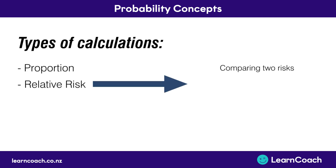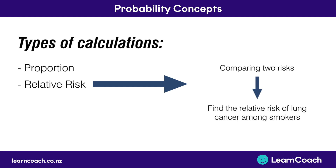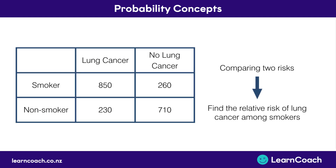Relative risk is a way of comparing two risks. An example would be finding the relative risk of lung cancer given that someone was a smoker. We can find this using the table provided.